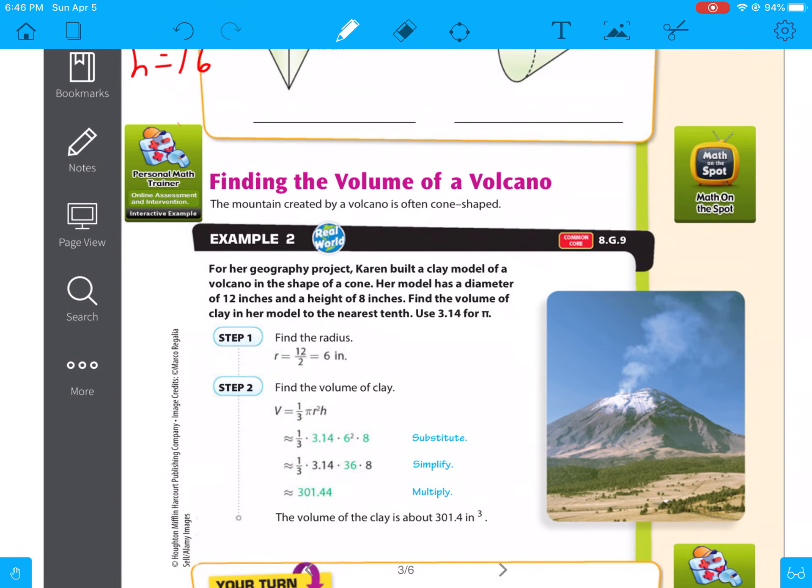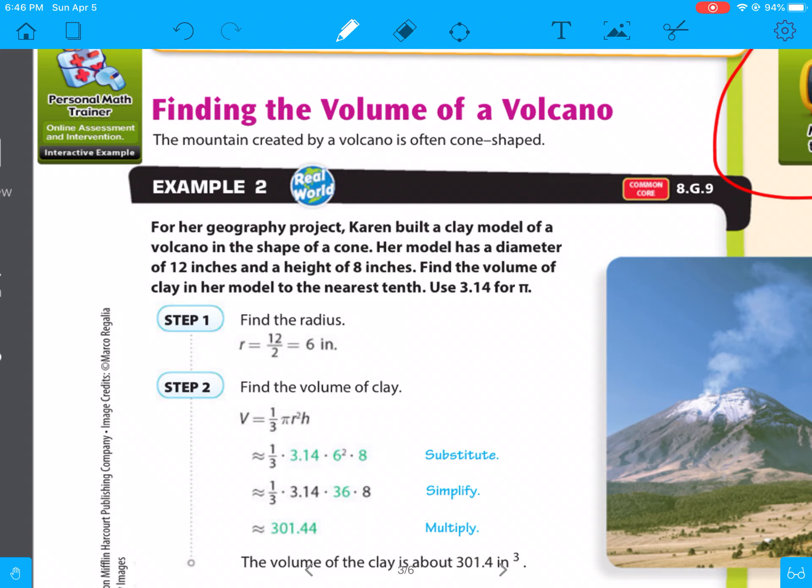So we're going to go on to finding the volume of a volcano. So what we have to do is this is your real-world problem. And if you ever get lost, there should be a QR code in your book. Scan it with your phone, and it will go through how to solve these. So the mountain created by a volcano is cone-shaped. So we're going to find the volume of a volcano. For her geography project, Karen built a clay model of a volcano in the shape of a cone. Her model has a diameter of 12 inches and a height of 8 inches. Find the volume of clay in her model to the nearest tenth. Use 3.14 for pi. So if you notice, there's that word diameter. We can't use diameter. We have to use radius. So radius is diameter divided by 2.